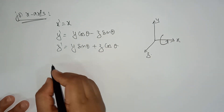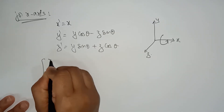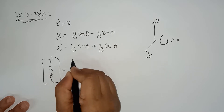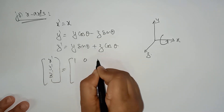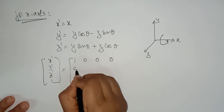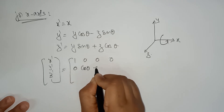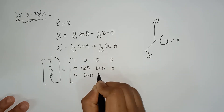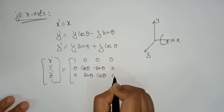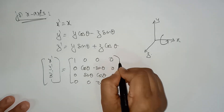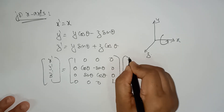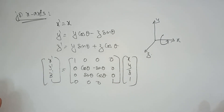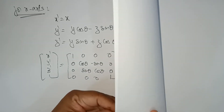In matrix form using homogeneous coordinates, x dash y dash z dash 1 equals the matrix: [1, 0, 0, 0 / 0, cos theta, minus sin theta, 0 / 0, sin theta, cos theta, 0 / 0, 0, 0, 1] multiplied by x y z 1. Always try to represent in homogeneous coordinates. This is for the x-axis.